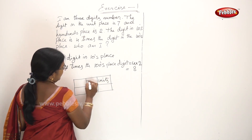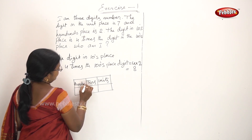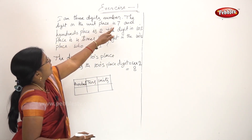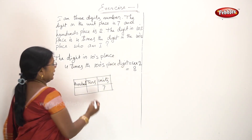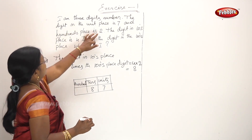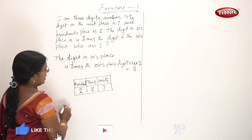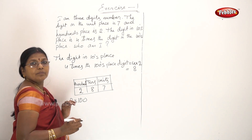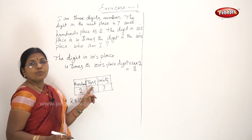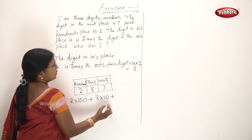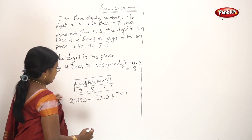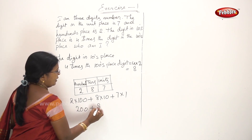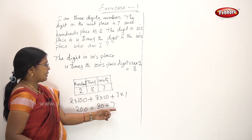Units, tens, hundreds. Units place: 7 into 1. Hundreds place: 2 into 100 = 200. Plus 8 into 10 = 80. Plus 7 into 1 = 7. 80 plus 7 = 87.